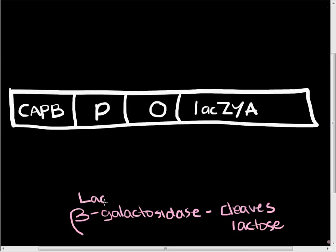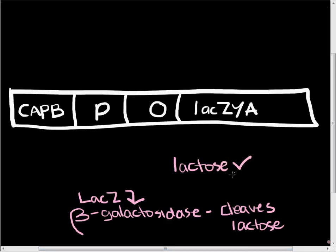Beta-galactosidase is the product of the lacZ gene. The cell does not want to produce all of these extra proteins — the proteins coded by lacZ, Y, and A — unless there is lactose present in the cell and there isn't a better source of energy, like glucose. So the lac operon contains systems to test that lactose is present and glucose is not present before producing the lacZ, Y, and A mRNA transcripts and translating those into proteins.